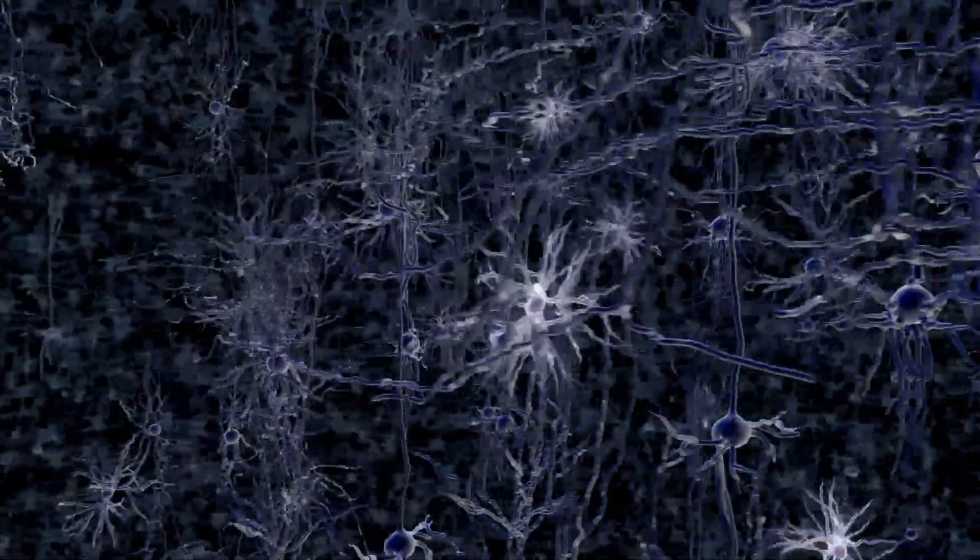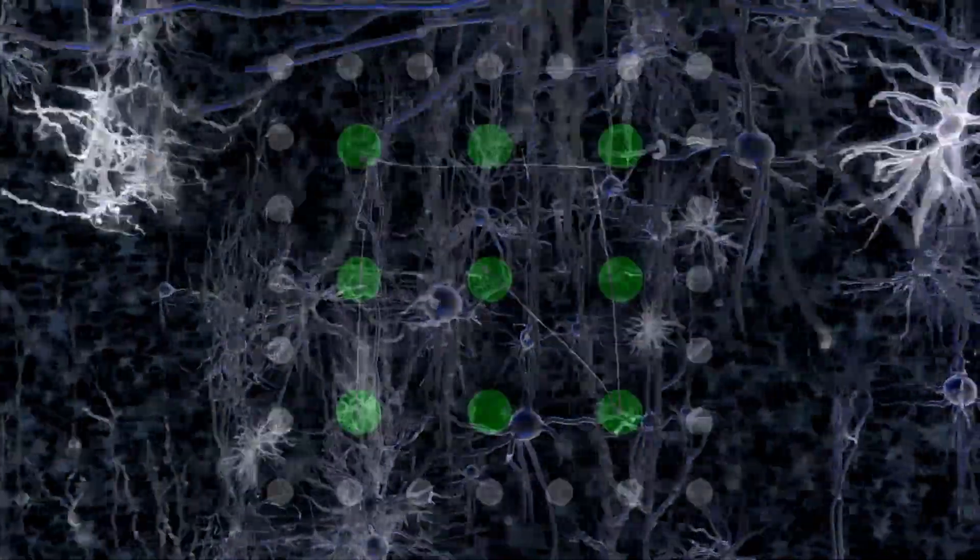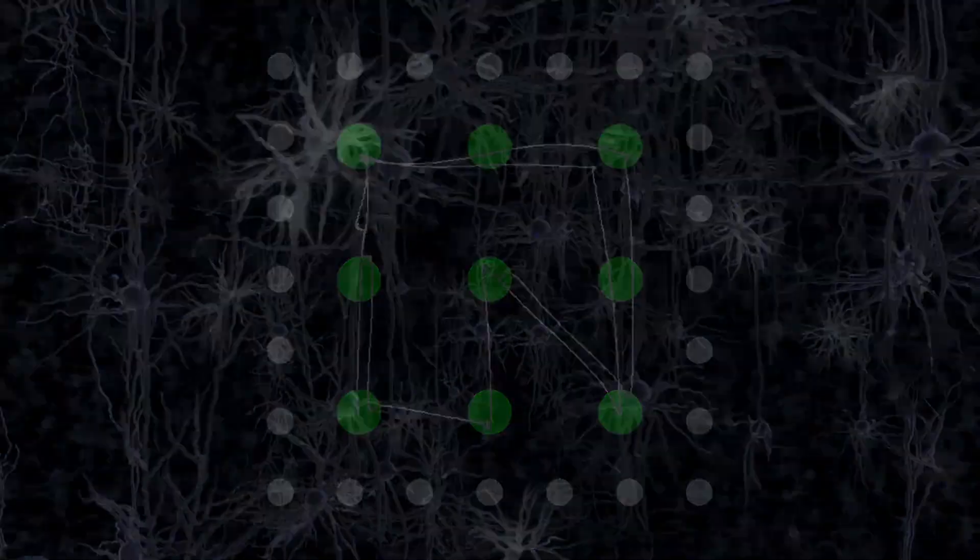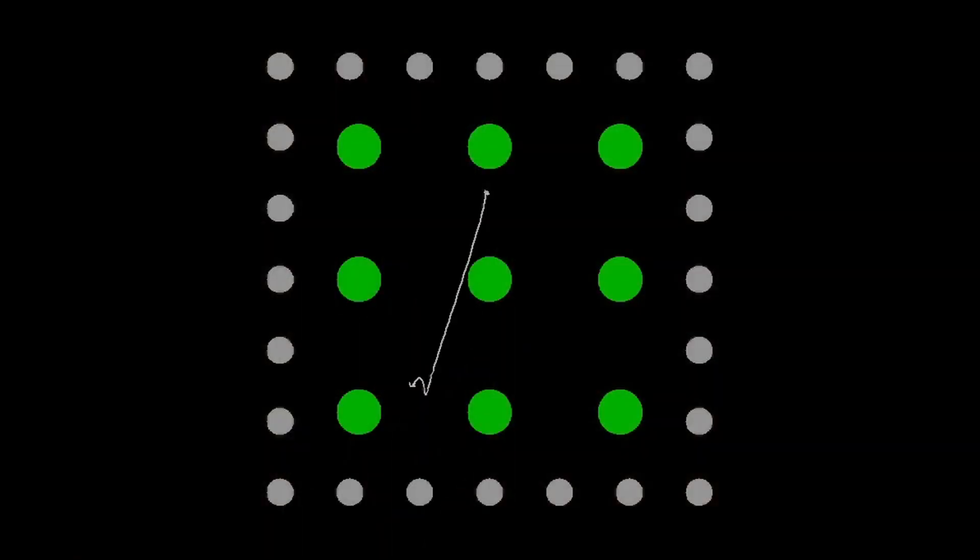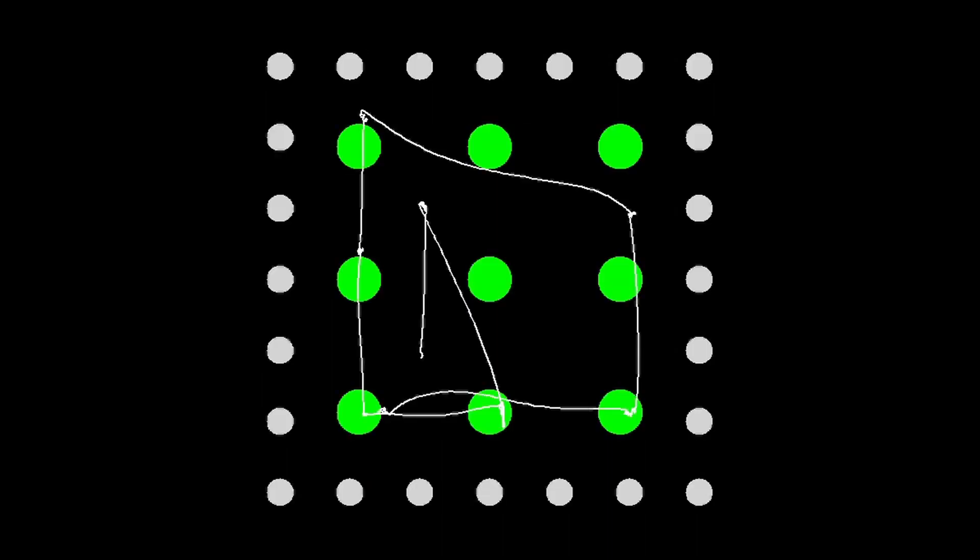What we found is that neurons in the striatum come to develop that activity, and as the habits that the animals are doing are getting stronger, so too is that activity. Previously with the same set of animals we had done an in-depth look at their behavior and found that it was a notion of cost that could drive the habit formation. Specifically, what cost is for these animals is the total distance that their eyes travel as they're forming their own pattern.